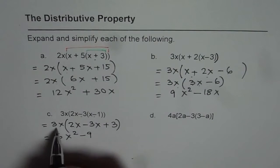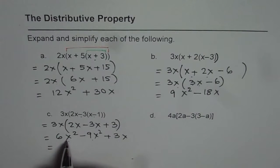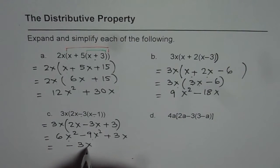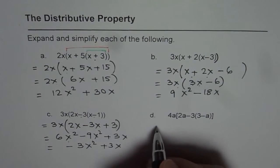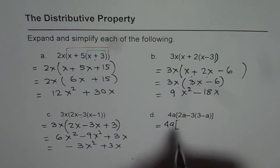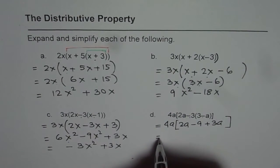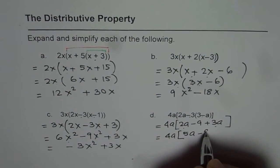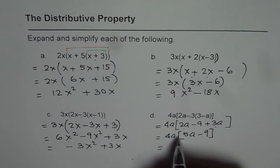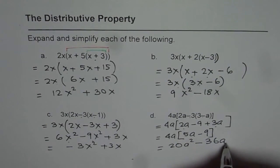3 times 3 is 9, with a negative sign x squared, plus 3 times 3 again giving 9x. Now combining like terms: 6x squared minus 9x squared gives minus 3x squared, plus 3x as our answer. For the next example, we have 4a with square brackets: 2a minus 9 minus minus plus 3a, bracket close. Combining 3a and 2a gives 4a times (5a minus 9), so 4 times 5 is 20a squared and minus 9 times 4 is 36a.